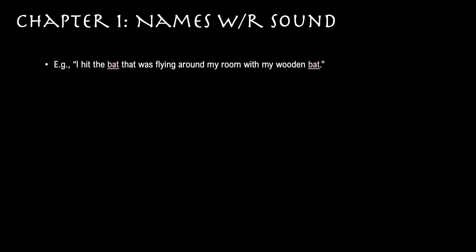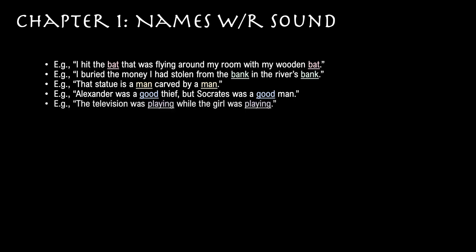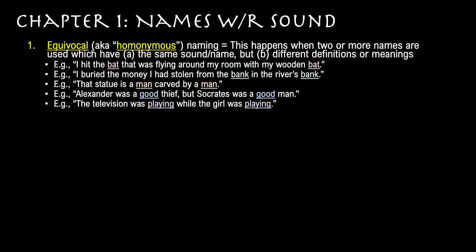Chapter 1 of the Categories concerns names with respect to sound. To understand this chapter, consider the following sentences: 'I hit the bat that was flying around my room with my wooden bat.' 'I buried the money I had stolen from the bank in the river's bank.' 'The statue is a man carved by a man.' 'Alexander was a good thief, but Socrates was a good man.' 'The television was playing, while the girl was playing.' What they have in common is that they have a certain sound repeated twice but according to a different meaning, definition, or sense. In Aristotle's words, they all involve equivocal naming.